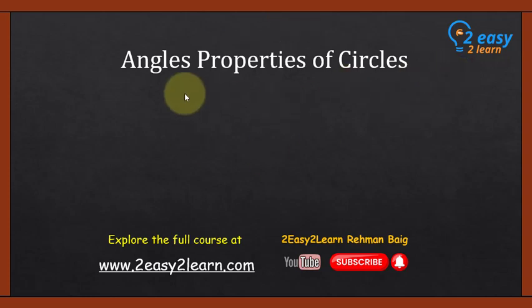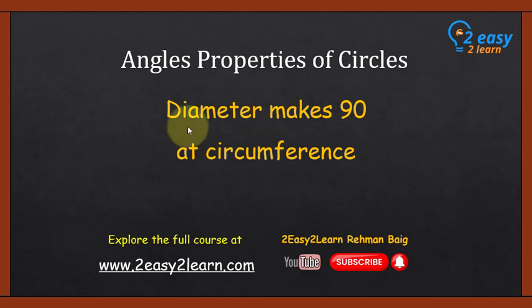Today we are going to discuss the third lesson of angle properties of circle. Today's property is diameter makes 90 degree at the circumference of circle. We will also discuss few exam questions. Let's start our lesson.